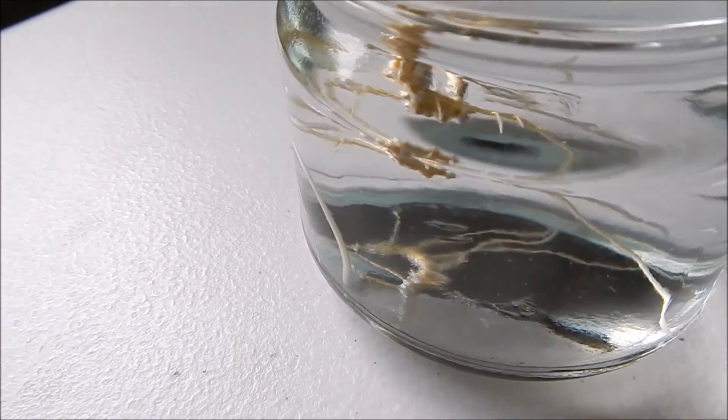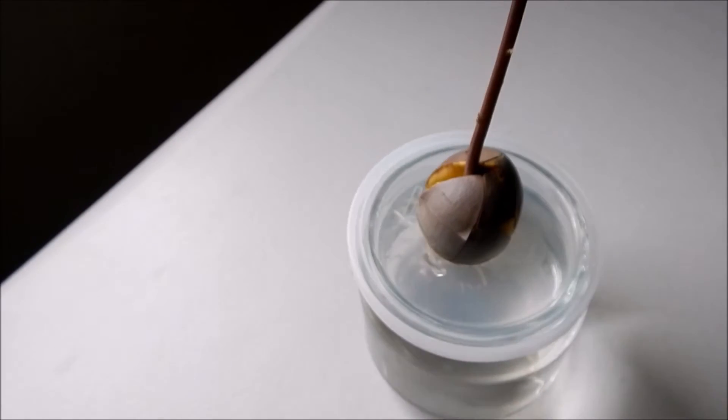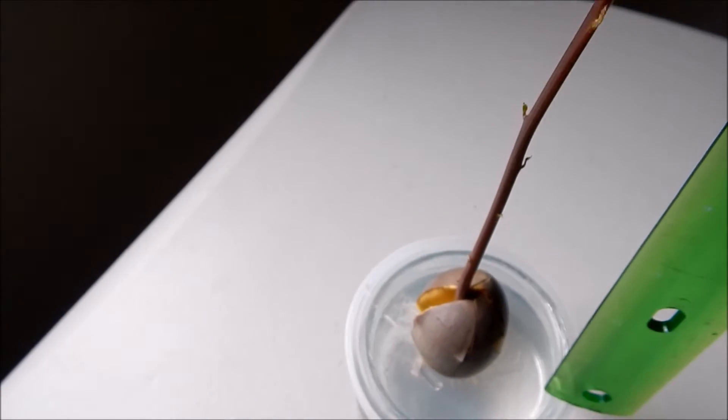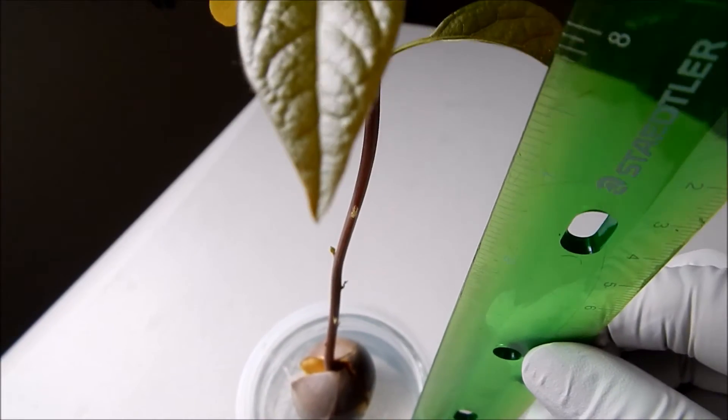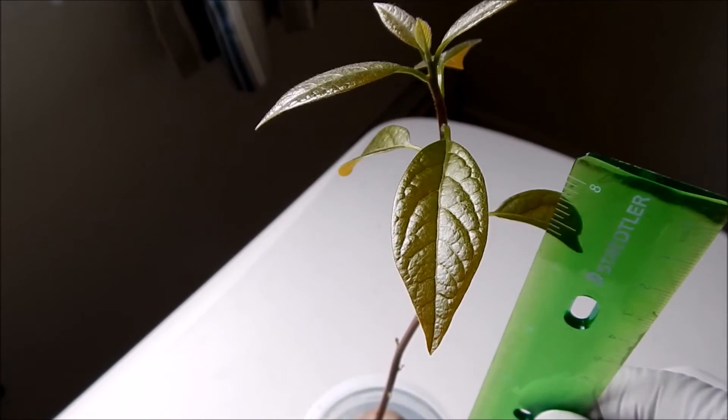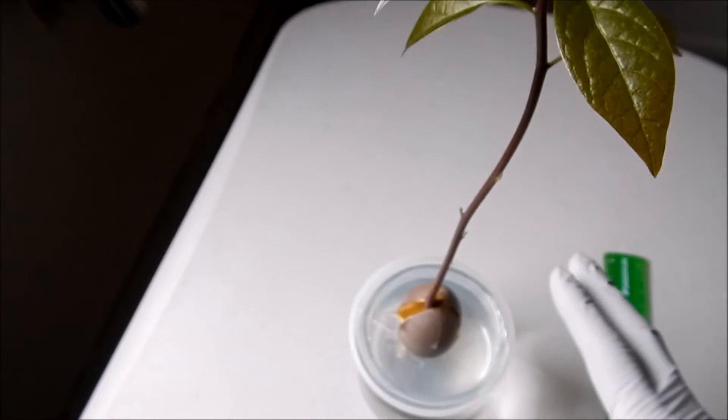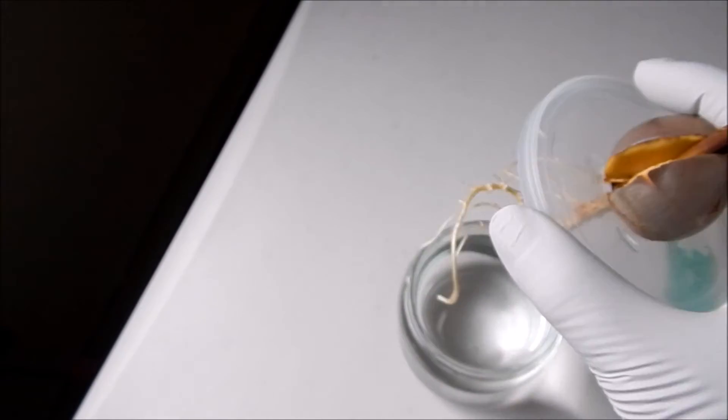At this stage, the root system contained primary, secondary and tertiary roots as well. The seedling's apical meristem towards light source through the window resulted in bending of the stem due to phototropism, one of the many plant tropisms which respond to external stimuli.